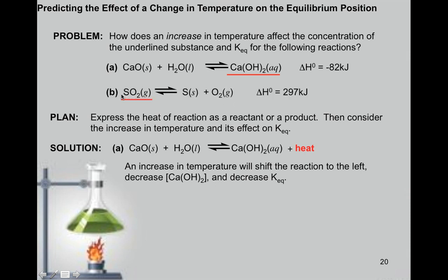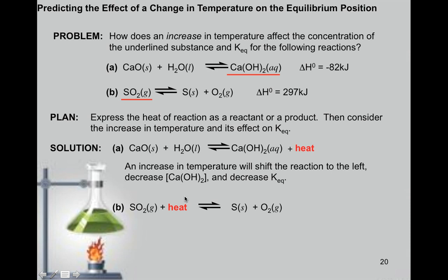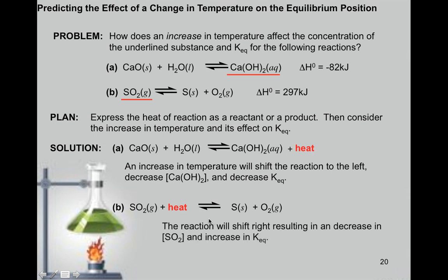Reaction B: given a positive delta H, this is endothermic — heat is absorbed, so heat is written on the reactant side. If we increase temperature, we're adding heat to the reactant side, making it heavier, so the reaction shifts to the right. Shifting right means we're making more products, so the concentration of sulfur dioxide increases while the reactants decrease.